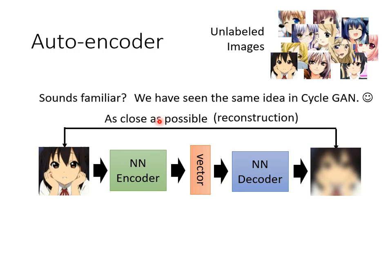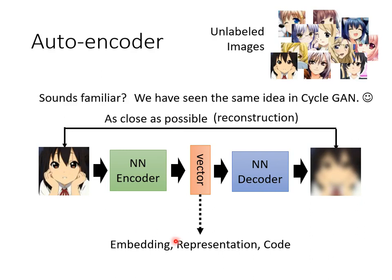No annotated data is needed at all. The output of the encoder is sometimes called embedding — as also mentioned when talking about BERT. Some people call it representation, some people call it code. The destination of the encoder is encoding an input to a vector. No matter what people call this vector — representation or code — it refers to the same thing.